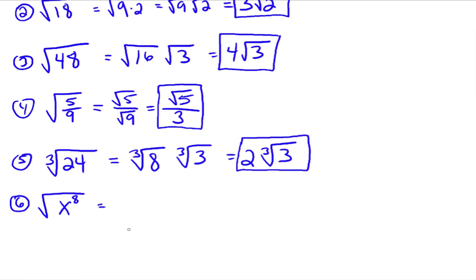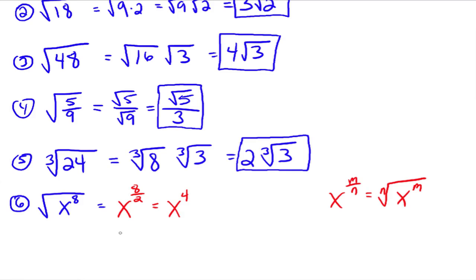Now for variables: the square root of x to the 8th. Recall the property x to the m/n equals the nth root of x to the m. Going backwards, the index is 2 and the exponent is 8, so we get x to the 8/2, which is x to the 4th. Similarly, the cube root of y to the 6th equals y to the 6/3, which is y squared. This works nicely when the exponent divides evenly by the index — 6/3 = 2, 8/2 = 4.